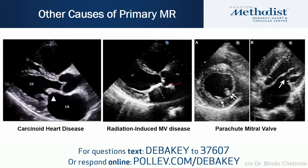Carcinoid MR is seen more often in tricuspid regurgitation but occurs about ten percent of the time in left-sided disease in patients with liver metastases, bronchial lesions, or intracardiac shunts. Another cause is radiation-induced mitral valve disease, which develops years after radiation and involves thickening of the aortic valve, the aortic-mitral intervalvular fibrosa, and the mitral valve leaflets. Parachute mitral valve is a rare cause where both leaflets are attached to a single papillary muscle.